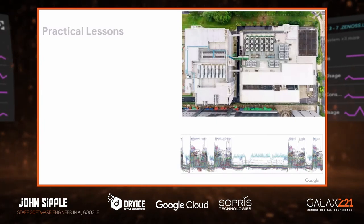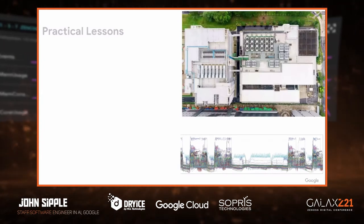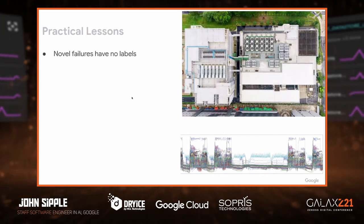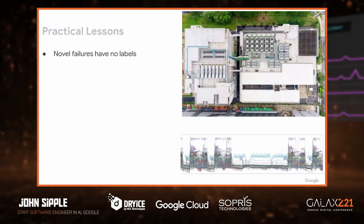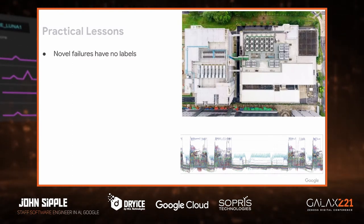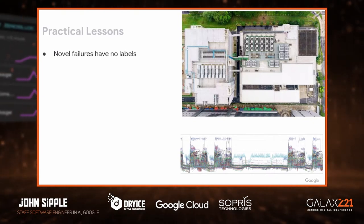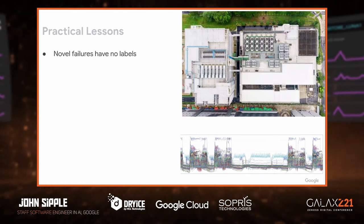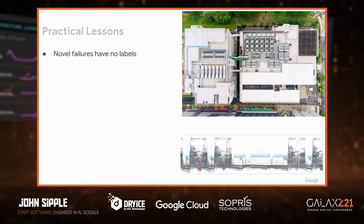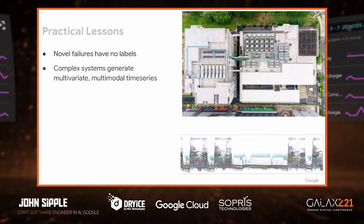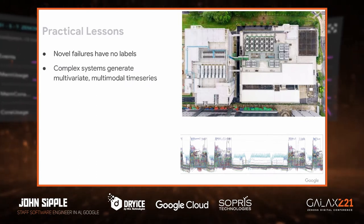In our implementation of anomaly detection, we gathered a few practical lessons. First, novel failures have no labels. Devices are put together into very complex systems in environments that haven't been fully defined, so there are emergent failures that have never been seen before. Even if you're trying to develop an anomaly detector based on known failures, by definition anomalies are rare events, and therefore you have very few labels. Novel failure modes have no labels; known failures have very few labels. That's always been a vexing problem — you have a very bad class imbalance.